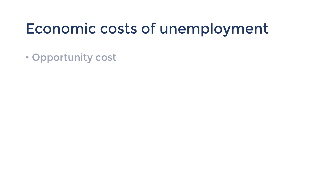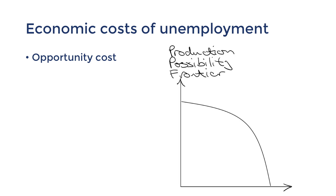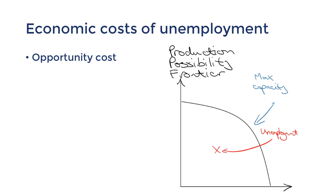Let's start with the immediate economic impacts. The first impact to talk about is the opportunity cost involved with unemployment. Think back to the Year 11 concept of the PPF, which shows what the economy would look like if we were at full capacity — it's a model to demonstrate the concept of opportunity cost. If we're producing inside the PPF, we're not using our resources to the full potential to maximize output. This is unemployment; our labour resource is not being used to the full potential, and this represents opportunity cost.